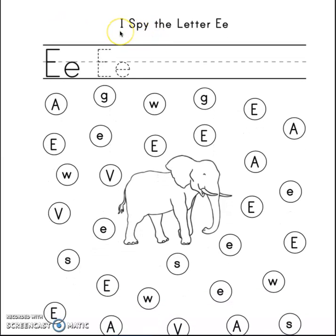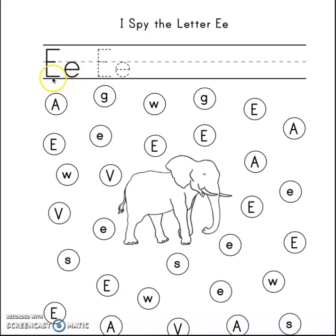So the first worksheet says 'I spy the letter E.' It's letter E but sounds 'e,' exactly as in elephant. So the first thing you have to do, friends, is pick a pencil and trace letter E — sounds 'e' — in uppercase and lowercase.